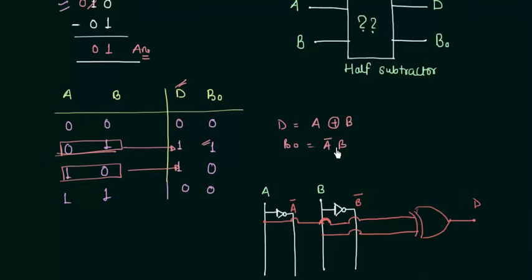Now the next thing is your borrow output which requires a 2 input AND gate. And for this we require the complement of A. So instead of taking from this line I will take it from the A complement line. So it goes like this as one of the inputs and the next one is your B. So you can directly take it from here or you can take it from here.